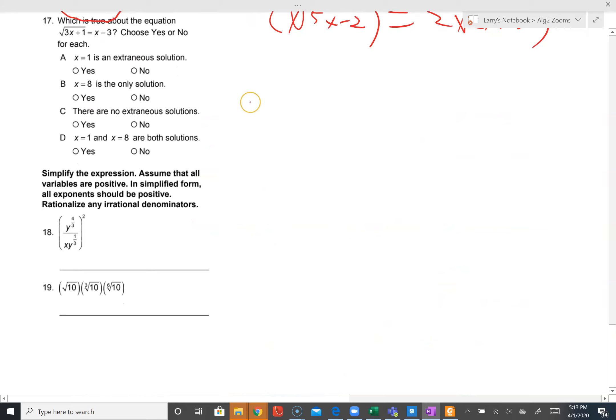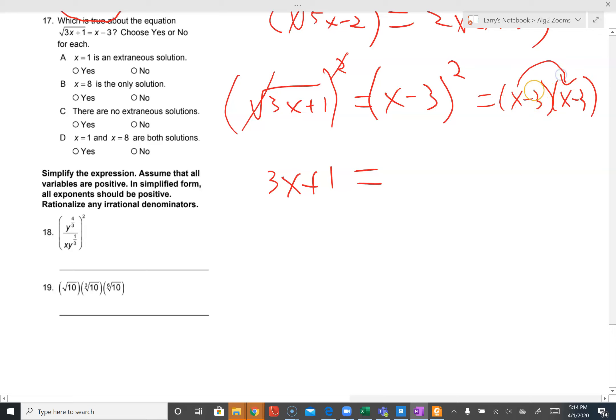Number 17. Square root of three x plus one equals x minus three. Step one, isolate the square root, it's done. Step two, undo the square root, so squaring both sides. The square cancels with the square root to leave three x plus one. Here, we need to square this, to square it multiply it by itself. Distributing, x times x is x squared, x times minus three is minus three x, another minus three x. Combining these gives negative six x. So we have x squared minus six x plus nine.